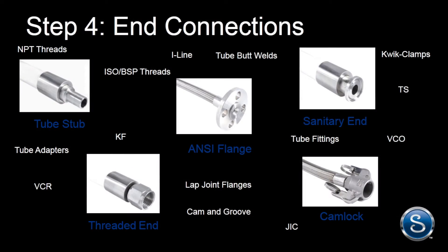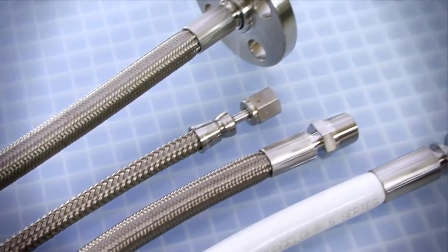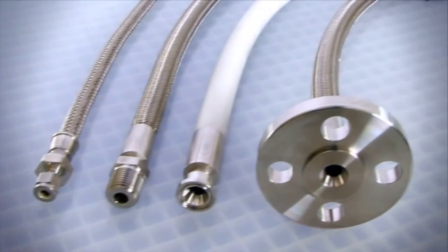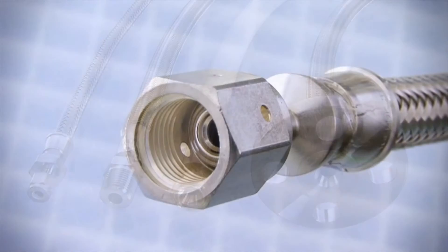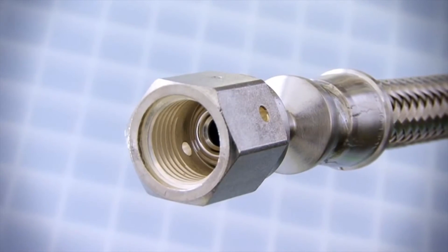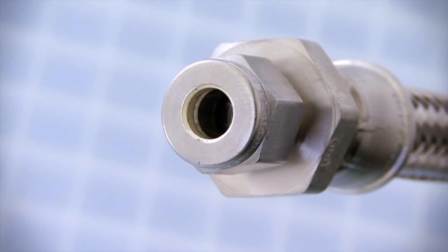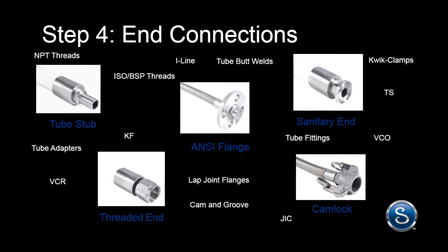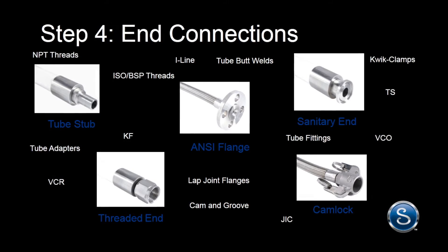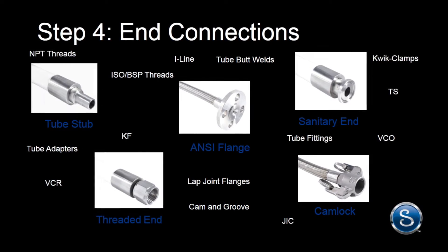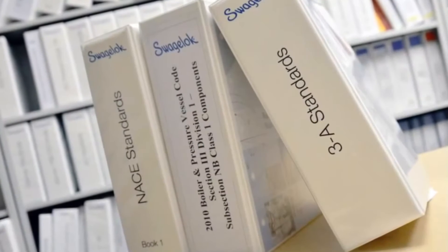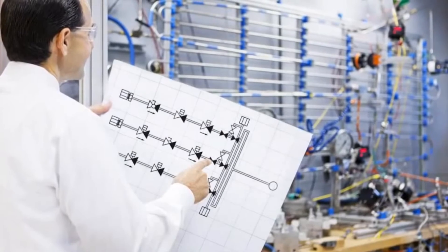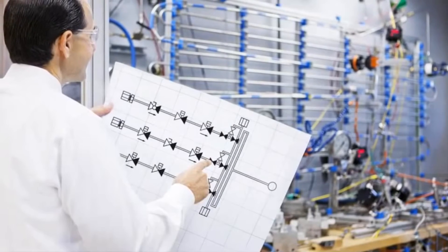Step four: select the end connections for the hose. The proper end connections will improve your system by eliminating the need for adapters, making installation and maintenance easier, reducing leak points and production downtime, and lowering the risk to personnel, equipment, and your end product. There are many different types to choose from — be sure to choose end connections that meet industry standards and your system specifications.